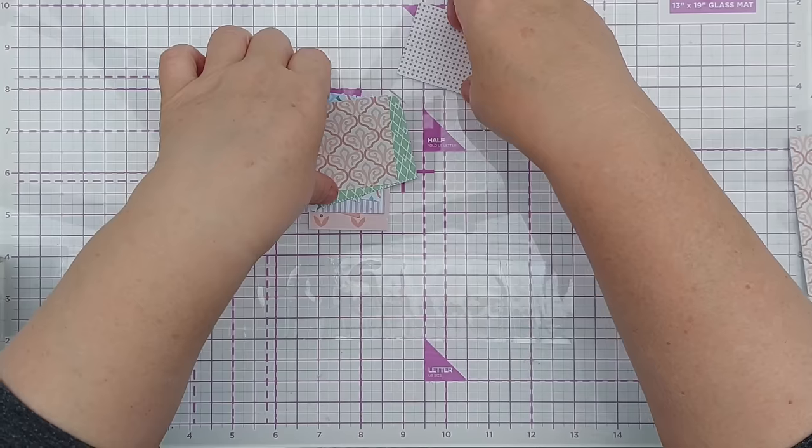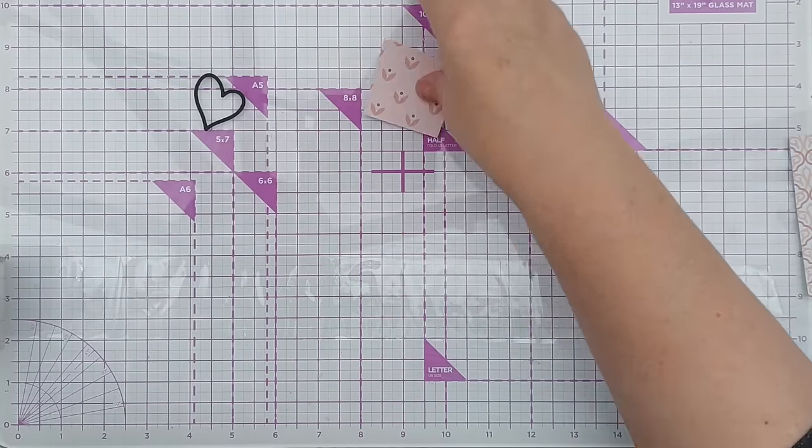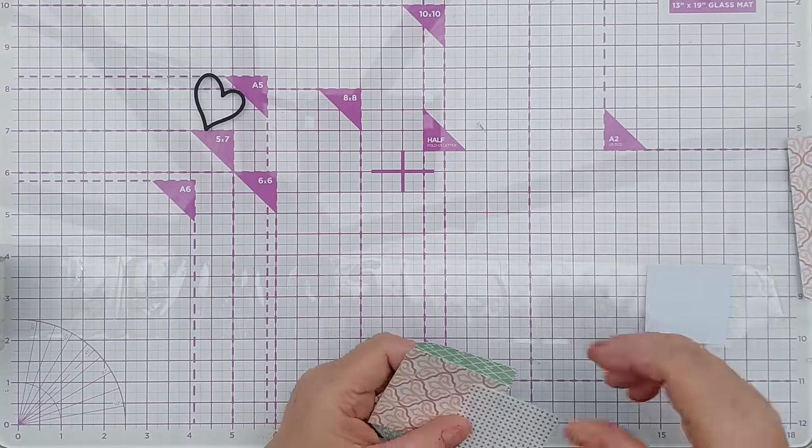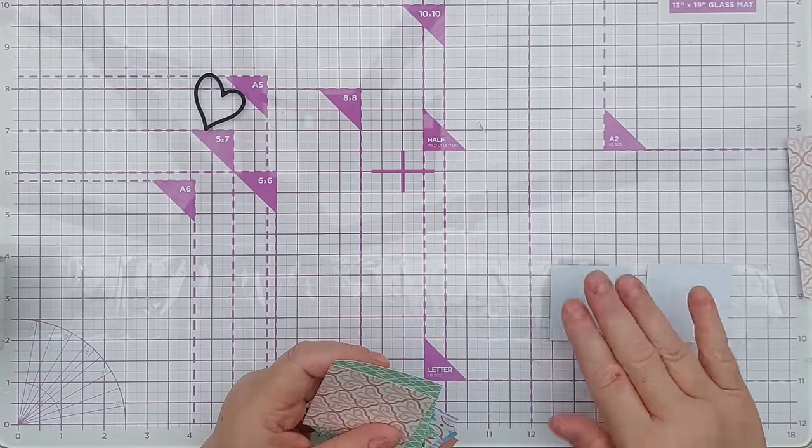For ease of use, I have rolled out a length of packing tape sticky side up and I'm going to carefully add my little squares onto it.